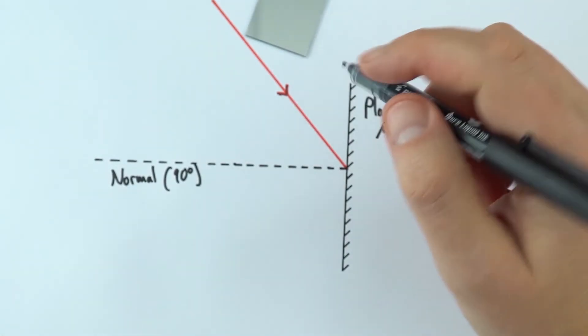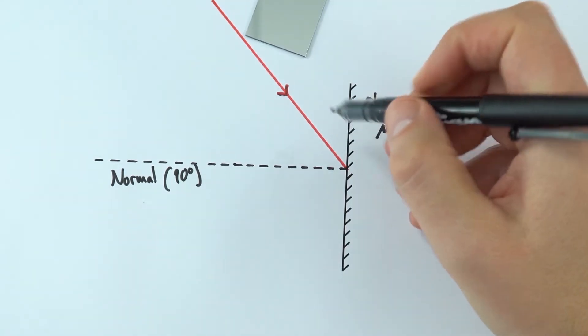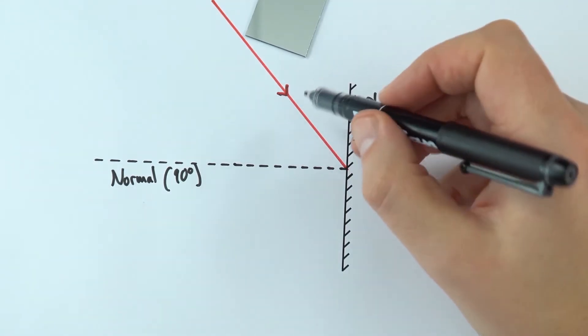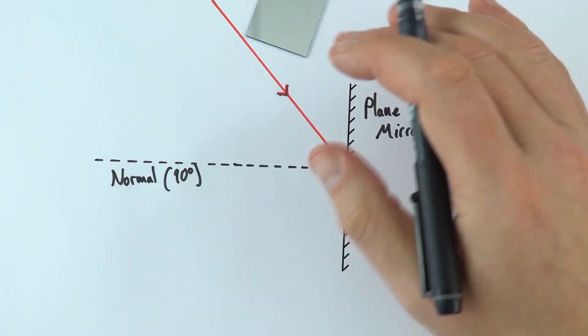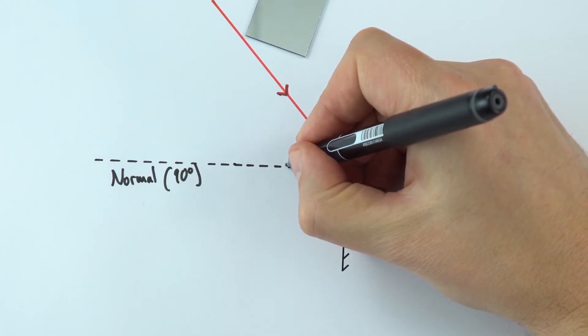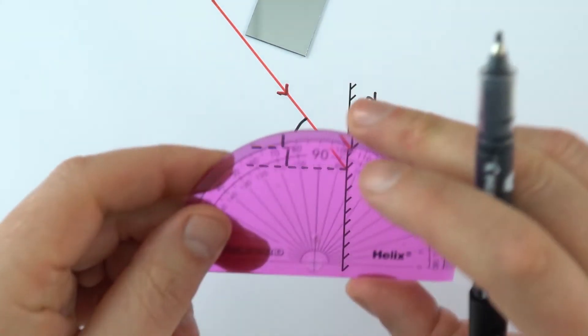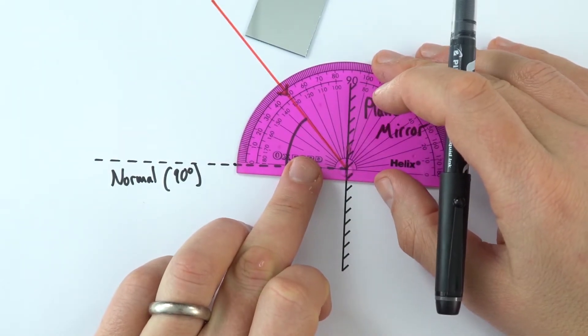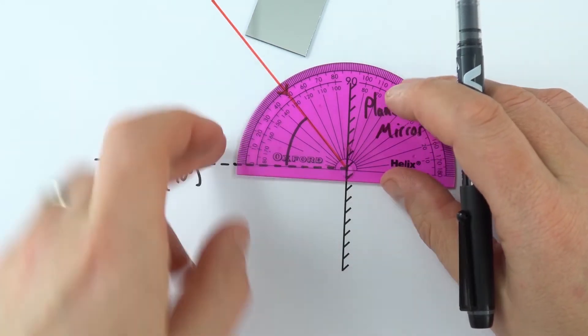Now there's an angle we can measure, and the important thing—this is where lots of people make a mistake—they measure the angle between the incident ray and the mirror. That's not what you should do. You should measure the angle between the incident ray and the normal. So on this one here, if I just measure that, I can see that this ray of light is coming in at 50 degrees.